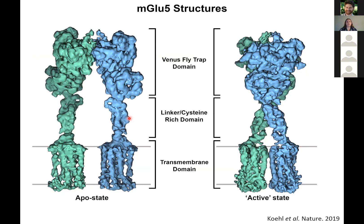The mGluR5 receptor has this venus flytrap domain, a long linker region that contains a cysteine-rich domain, and the transmembrane domains of the two protomers. Upon activation, there's a closure of the venus flytrap domain, and these conformational changes transduce to the transmembrane domains through the cysteine-rich linker region, which is actually very important to transduce that signal for activation.